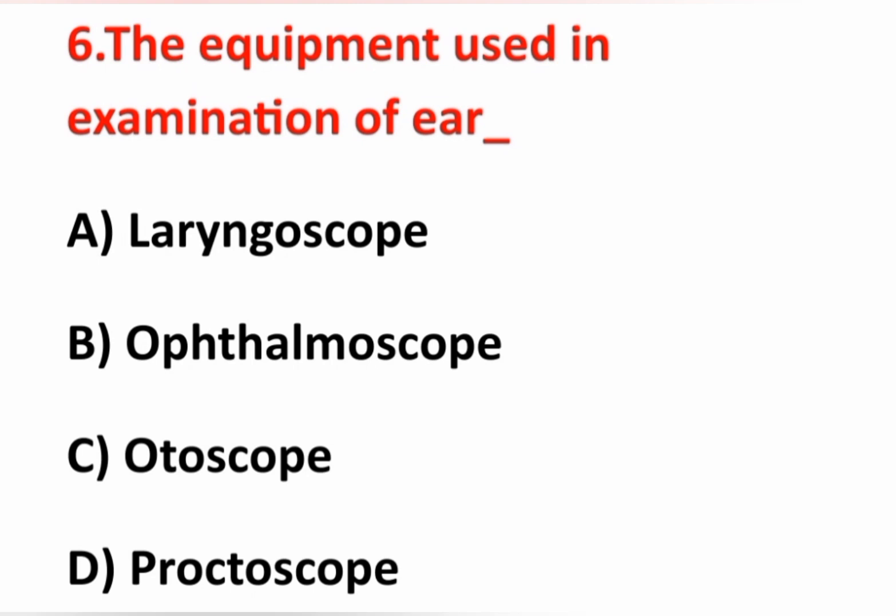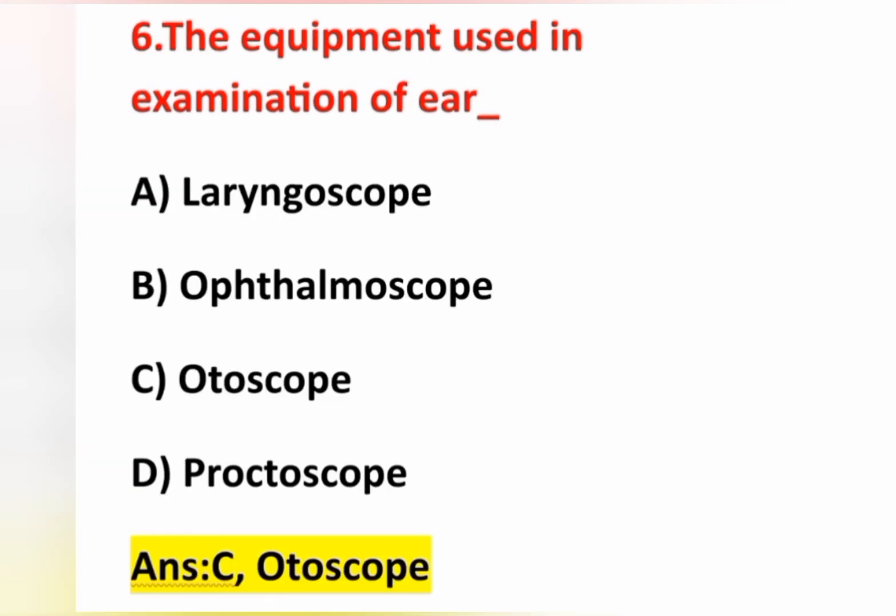Sixth question: the equipment used in examination of the ear — option A laryngoscope, option B ophthalmoscope, option C otoscope, option D proctoscope. The answer is otoscope — option C is correct. Laryngoscope is used to visualize the larynx, proctoscope is used to visualize the rectum, and ophthalmoscope is used to visualize the fundus of the eye.